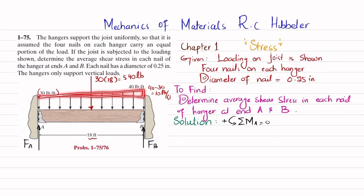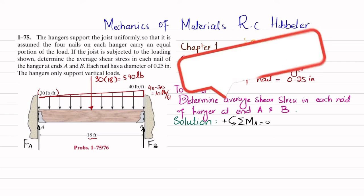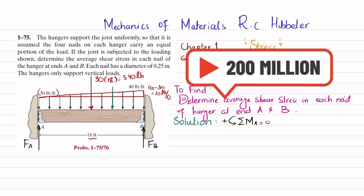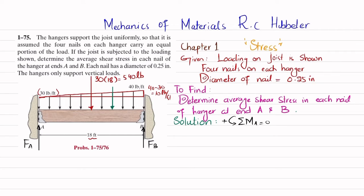Now we convert the triangular load into a point load. The triangular load has magnitude 0 at one end and 10 lb/ft at the other end. Converting it: one-half times 10 times 18 equals 90 pounds. Its location from point B is L over 3, so 18 divided by 3 equals 6 feet from end B. The uniformly distributed load acts at its midpoint, so its distance is 18 divided by 2, which equals 9 feet.